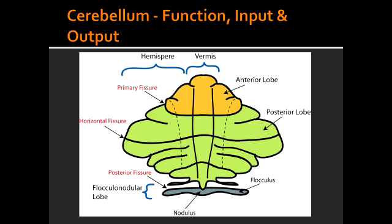What is the mnemonic to help you remember the four deep cerebellar nuclei from lateral to medial? The way you remember this is don't eat greasy foods. So that's dentate, emboliform, globose, and fastigial.